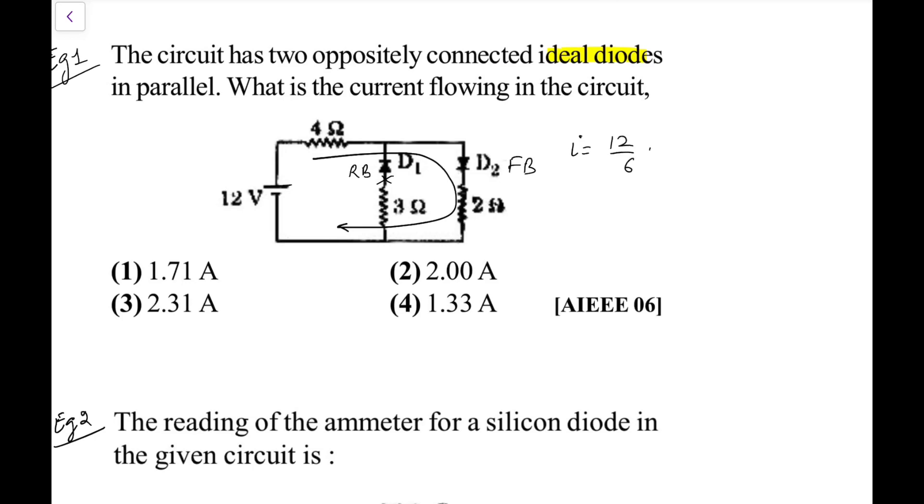Current would be: effective resistance is 4 plus 2, that's 6. So that is 12 by 6, that is equal to 2 ampere. So the current 2 ampere will flow here, it will go here, no current will flow here. So the current flowing in the circuit or in the D2 would be 2 ampere, no current flows in the diode D1.